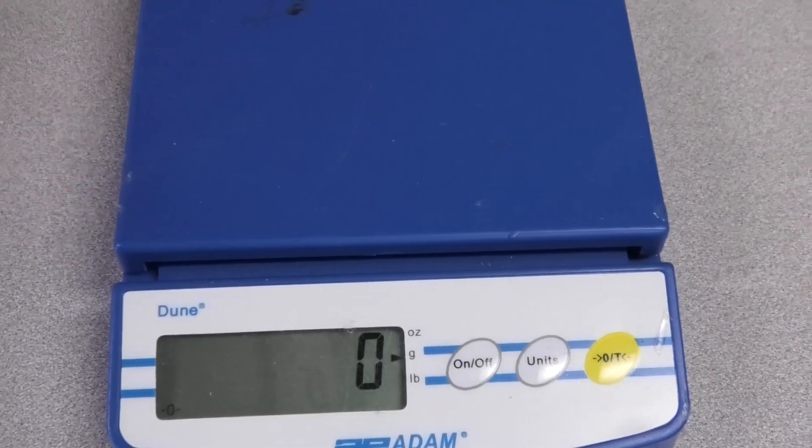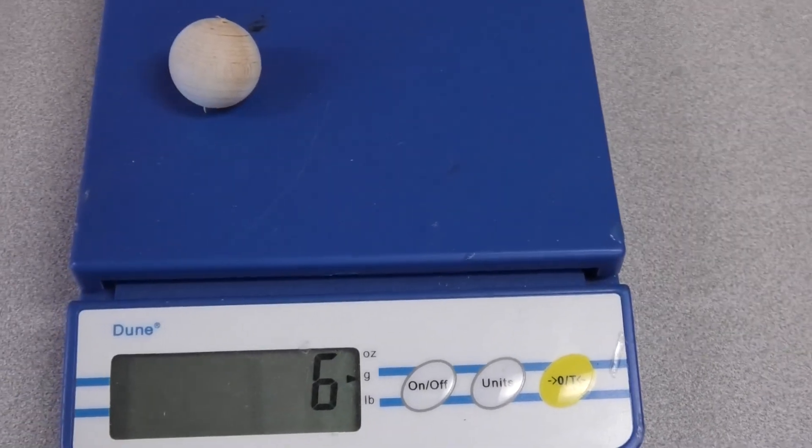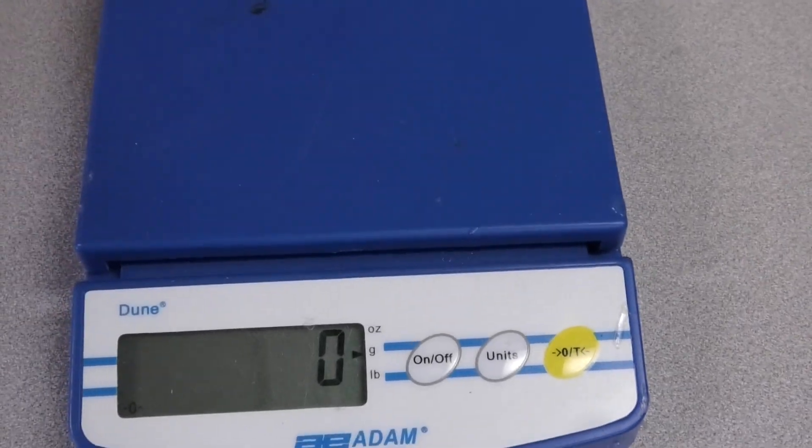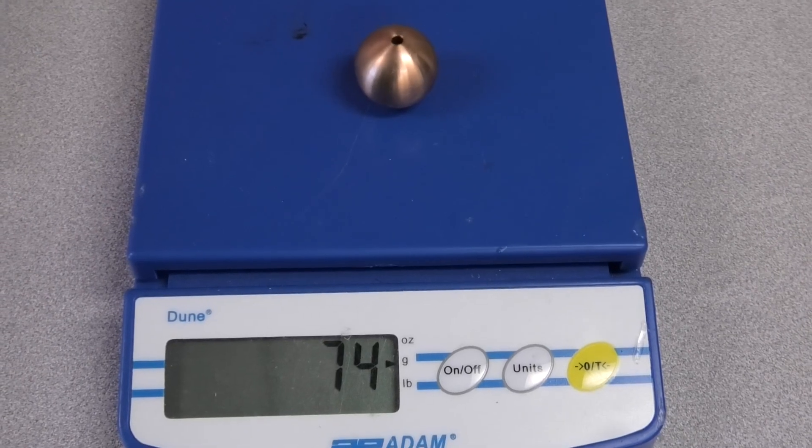Much lighter. The wood, dry, not wet, is going to come out to about 6 grams. And the copper is going to come out to about 74 grams.